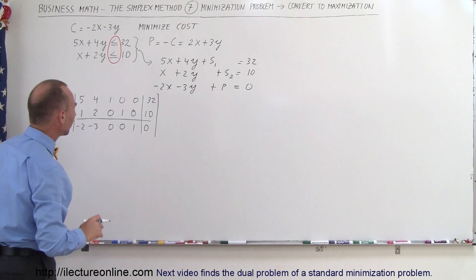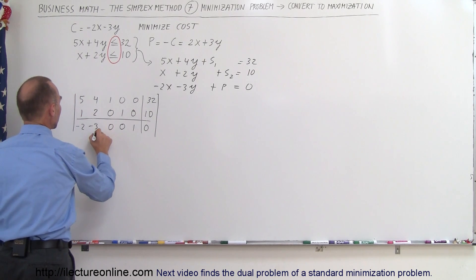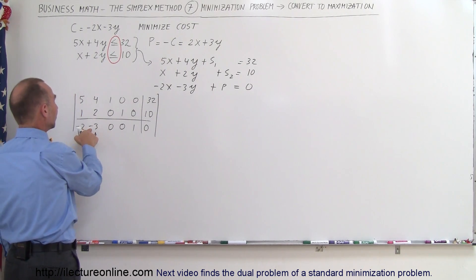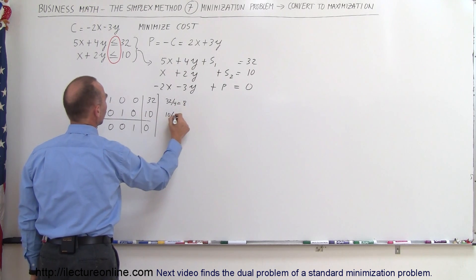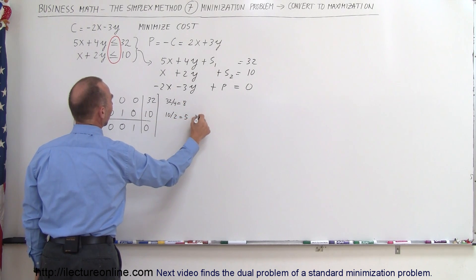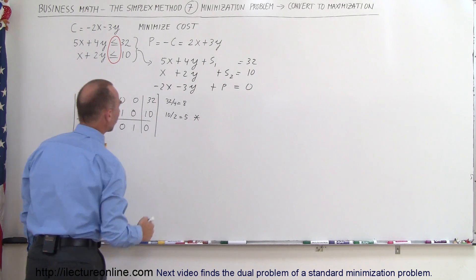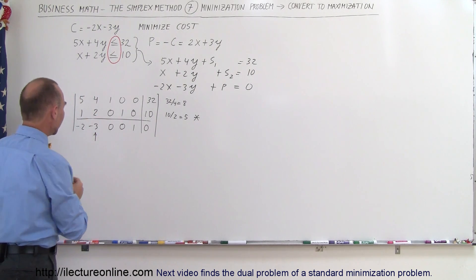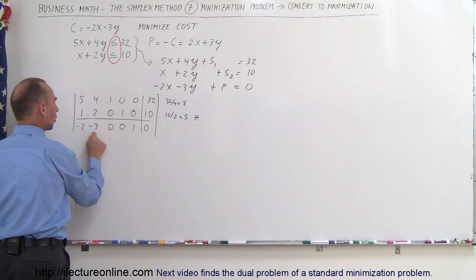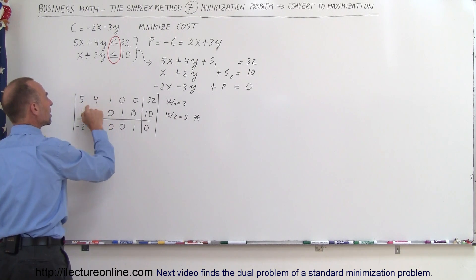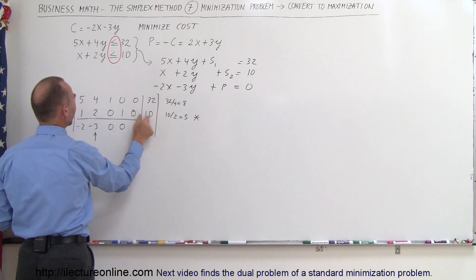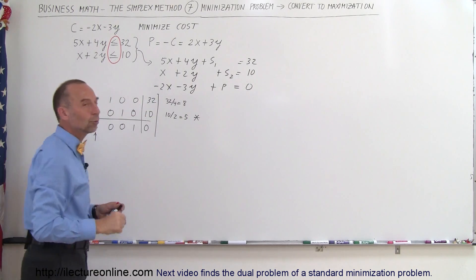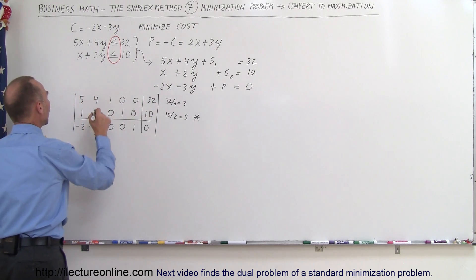Now we can begin to solve. We start with the column that has the largest negative number. We take the ratio of 32 divided by 4, which equals 8, and 10 divided by 2, which equals 5. We take the lowest ratio — that is the one we're going to pivot around.